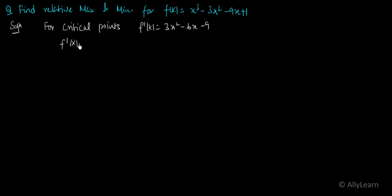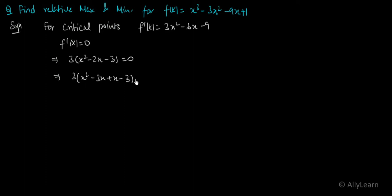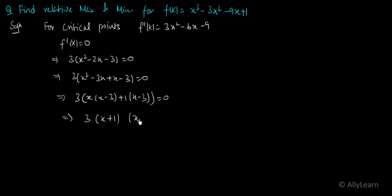This is a continuous function, so first we set the derivative equal to 0. For critical points, we calculate the derivative: f'(x) = 3x² - 6x - 9, and set it equal to 0. Taking 3 as common: x² - 2x - 3 = 0. Factoring: x² - 3x + x - 3 = 0, giving (x + 1)(x - 3) = 0. Since 3 can never be 0, the values of x are -1 and 3. So we have two critical points.